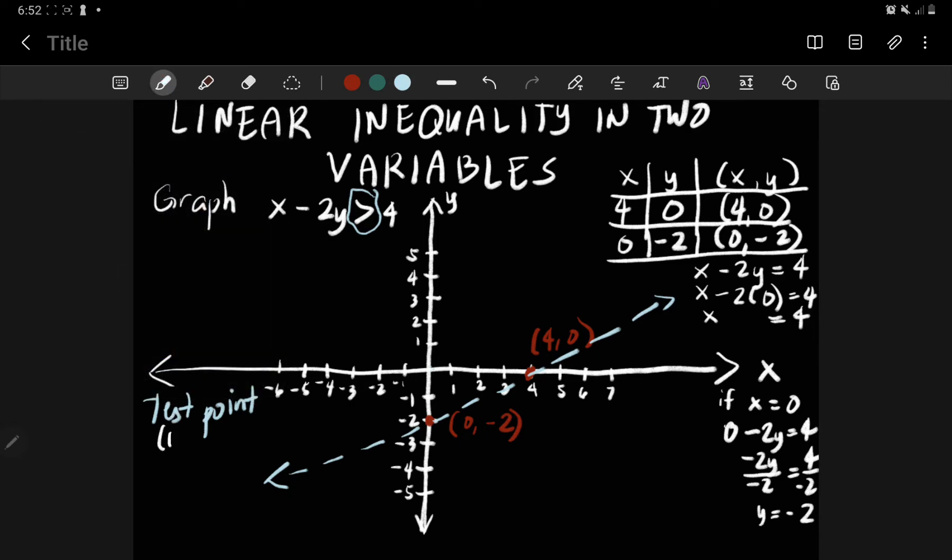0, 0. Substitute to the given inequality x minus 2y greater than 4. So x is 0 minus 2, your y is 0, greater than 4. So 2 times 0 is 0. So 0 minus 0 is definitely greater than 4. But as you can see, 0 is never greater than 4. So this is false.